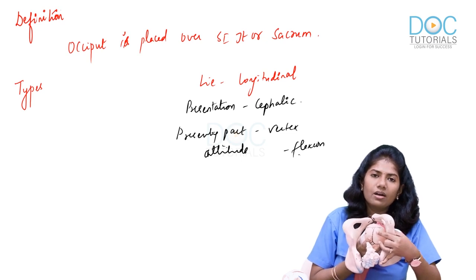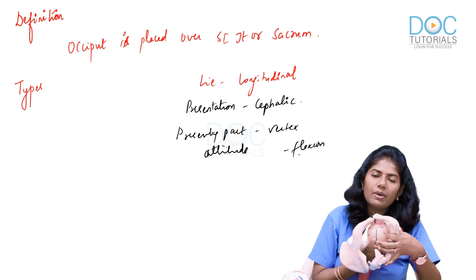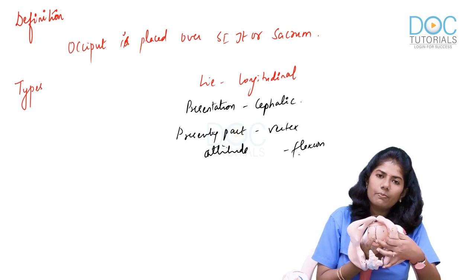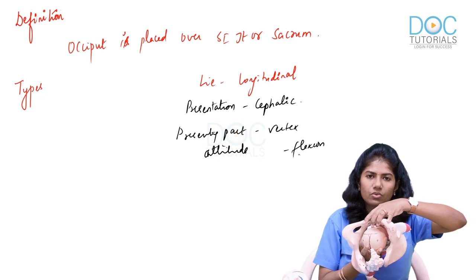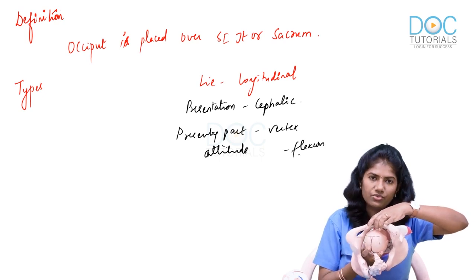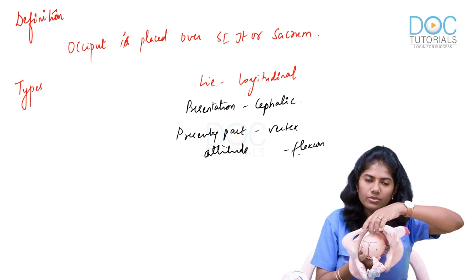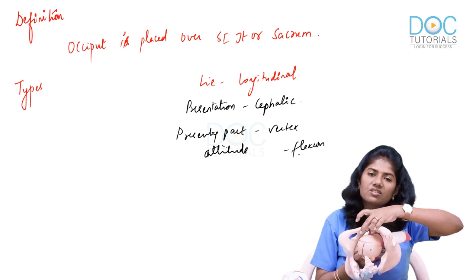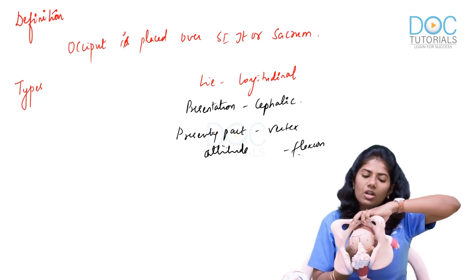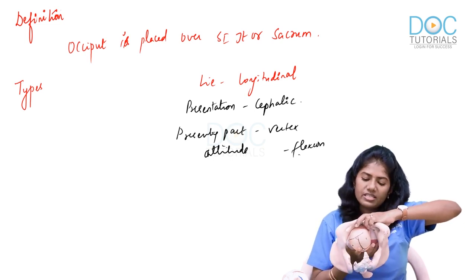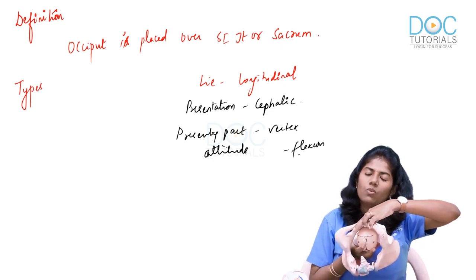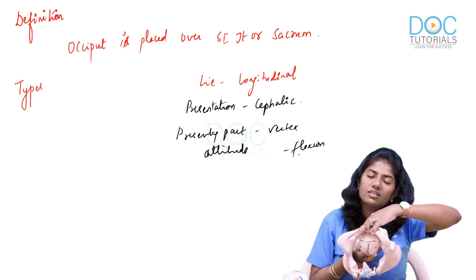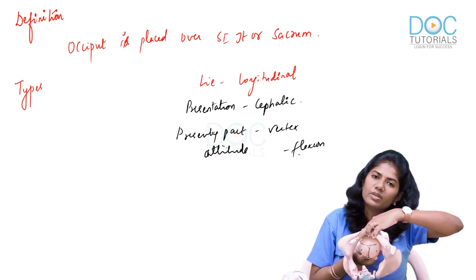The denominator is the fetal part that touches the pelvis. In flexion attitude, the occipital bone is under the pubic symphysis, which is considered to be direct anterior. Therefore, we call this position direct occipito-anterior.